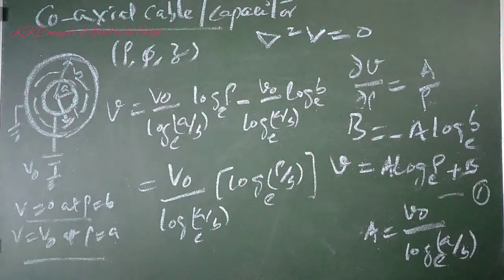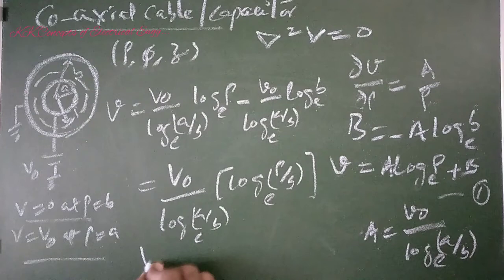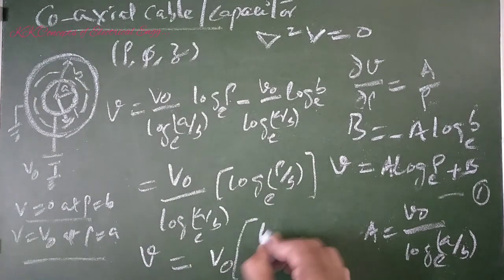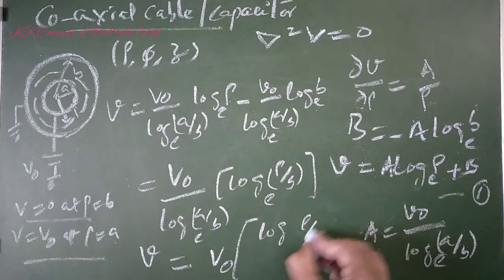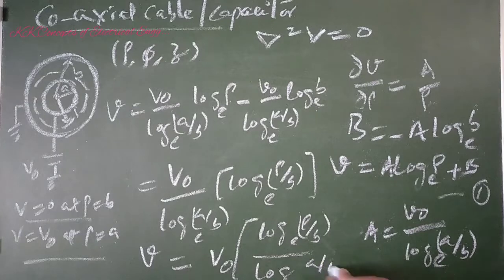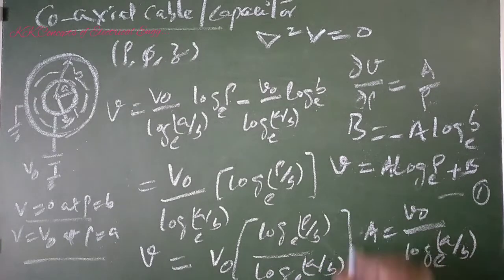Since log A minus log B equals log(A/B), then V equals V₀ log(ρ/B) divided by log(A/B).